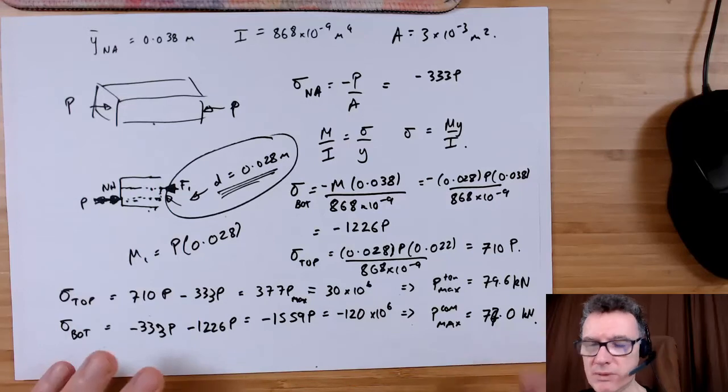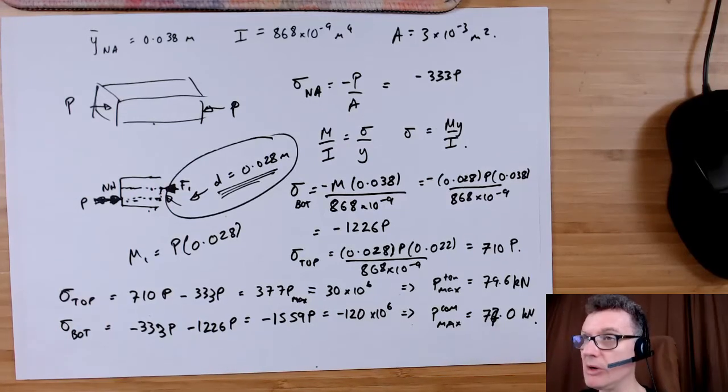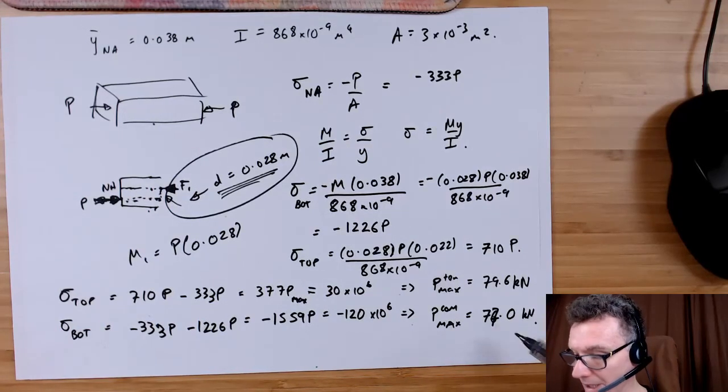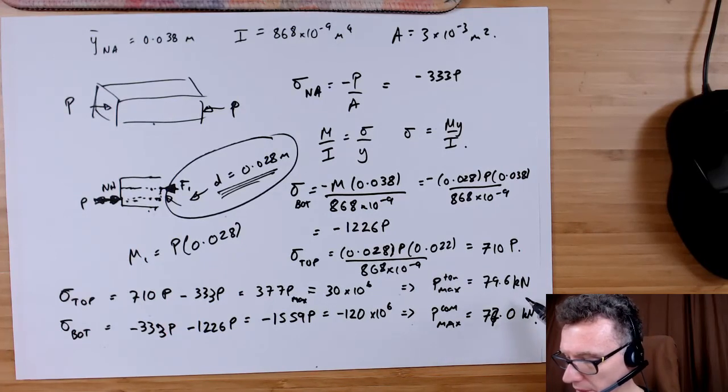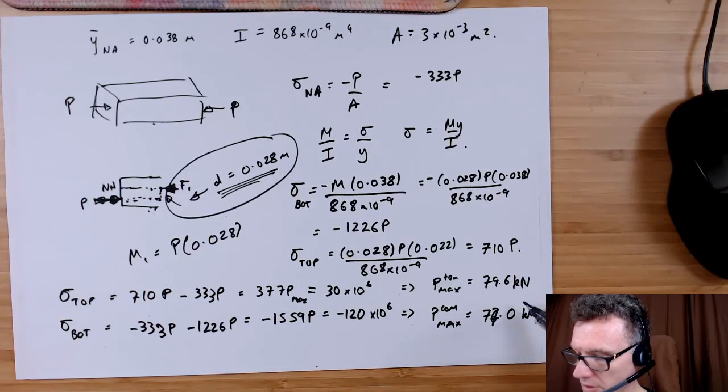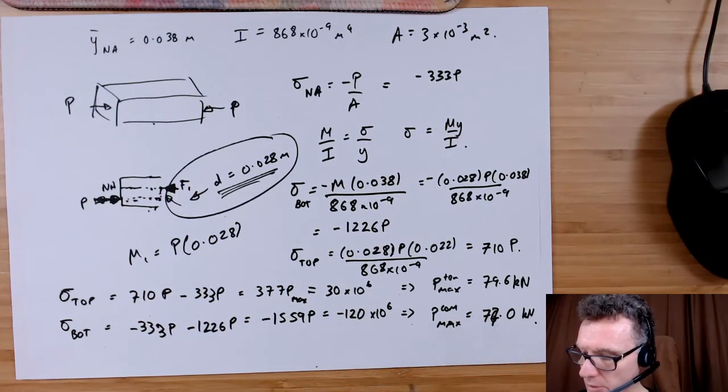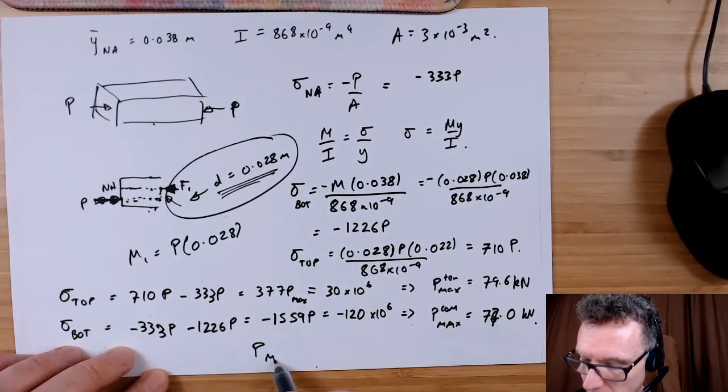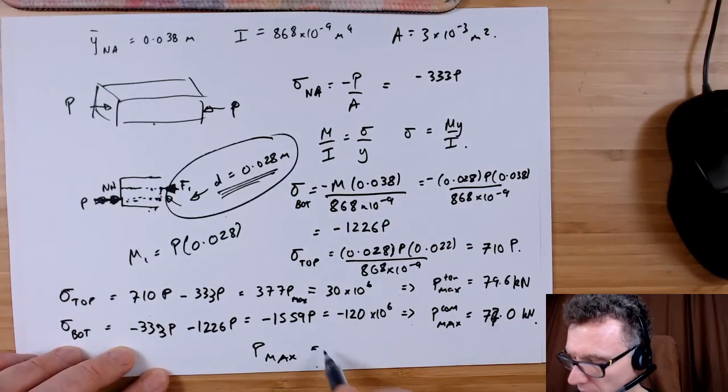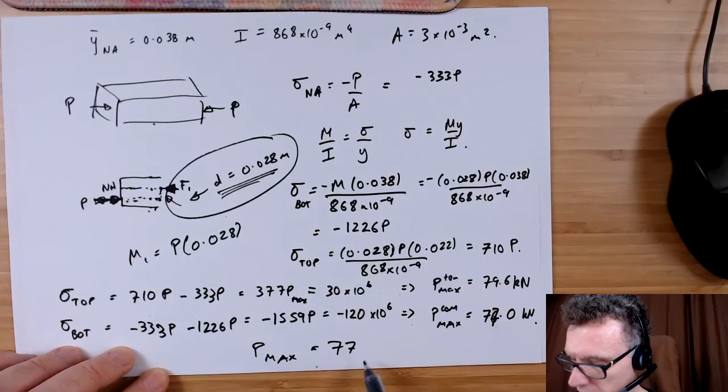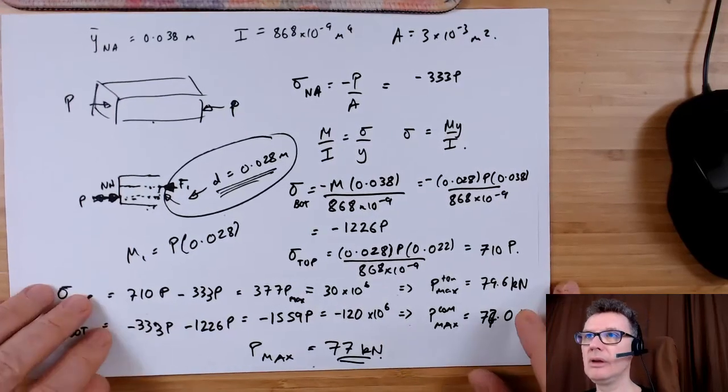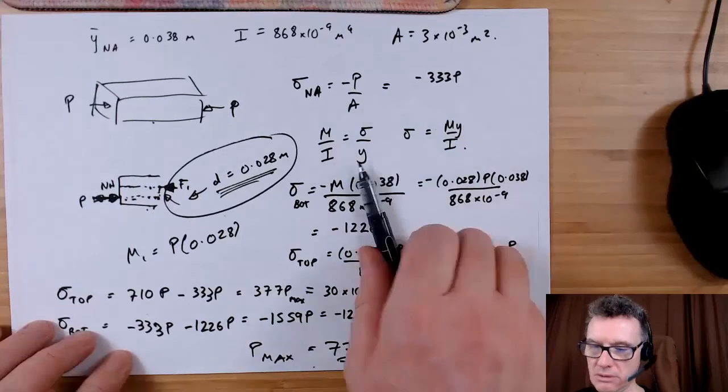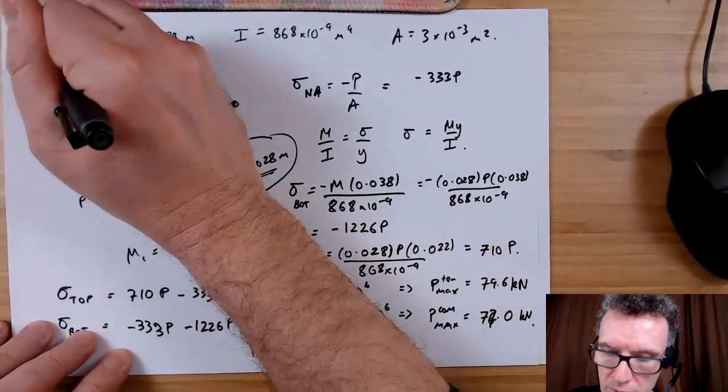So the next thing that you want to do is not choose the highest P, because that is when it's going to break in tension, and that's when it's going to break in compression. The P we want is the lowest P, so the maximum P that we can apply, P max, is going to be the lower one which is the 77 kilonewtons. Okie dokie, that's problem 3.2.